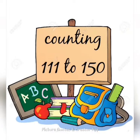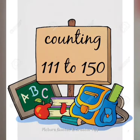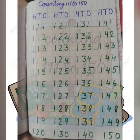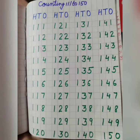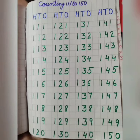Ab humari counting hai 111 to 150 tak. So bacho, main ek baar aapko bataati hoon. Aapko notebook mein is tarah se karna hai — full box ka use karke, one box leave karke. H T O: O means ones, T means tens, aur H means hundreds. One one one yani one hundred eleven.